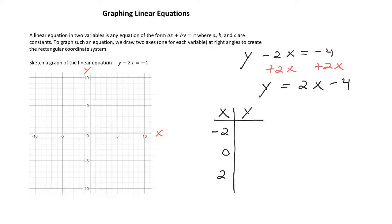For, let's say, negative 2, Y is equal to 2 times negative 2 minus 4. So that is negative 4 minus 4. That simplifies to negative 8.